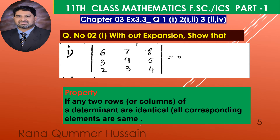The next question says: without expansion, show that this determinant is equal to zero. The condition is you cannot expand it — you must prove the result is zero using a property. The property is: if any two rows or columns of a determinant are identical, then the determinant equals zero.